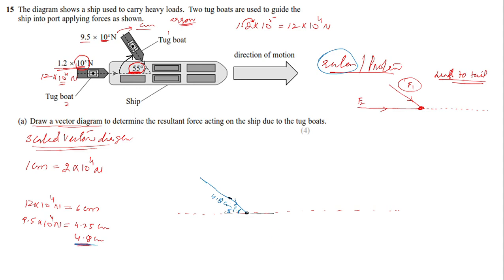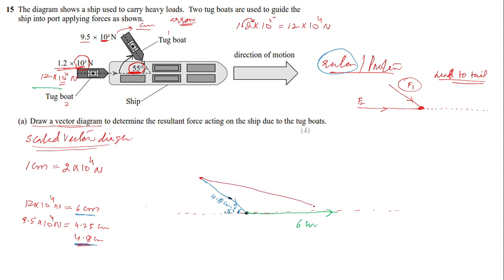From the head of F1, draw F2: place your ruler horizontally and draw a 6 cm arrow in the horizontal direction, since the second force is horizontal. Your resultant force is then the arrow connecting the tail of the first vector to the head of the second vector. Draw this straight line with your ruler and add an arrowhead pointing toward the second vector.